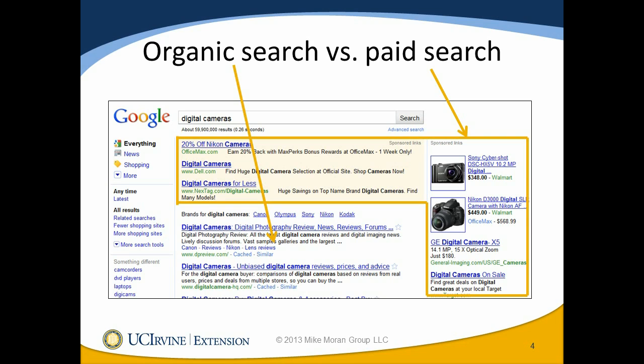Organic search is kind of the librarian's answer to the question. Paid search is the advertiser's answer — all the things someone has paid to show you. Although it's not paid in the traditional way advertising is paid. If you think about a newspaper or magazine, you pay to put your ad in the issue regardless of whether anyone buys anything. Same is true for TV and radio. Paid search is a little different — you actually don't pay anything to have the ad shown. What you're paying for is to have the ad clicked.